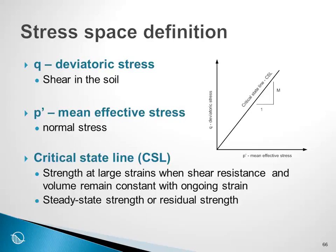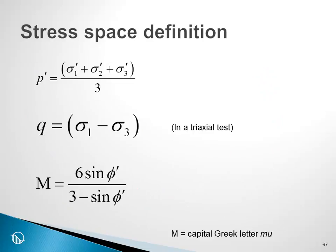Just a few definitions before we go into the detailed description. Q is the deviatoric stress — it is a representation of the shear in the soil. P' is the mean effective stress, related to the normal stress. The critical state line represents the strength at large strains when the shearing resistance and the volume remain constant with ongoing strain. It is referred to as the steady state strength, or sometimes also as the residual strength. There is a subtle difference between the two definitions, but I won't go into that at this time.